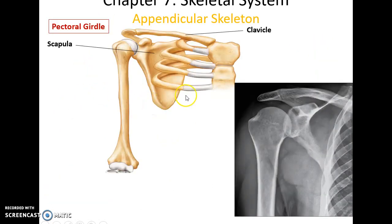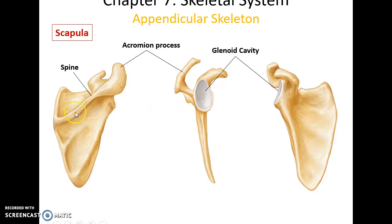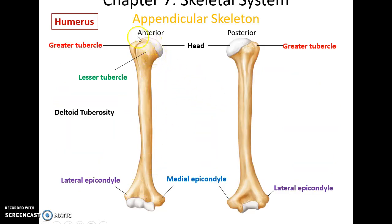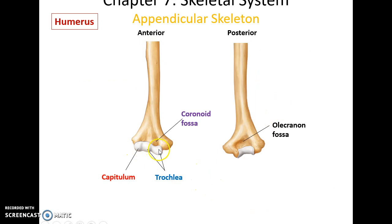The appendicular skeleton includes the pectoral girdle, consisting of the clavicle and scapula, which attaches the upper limbs to the axial skeleton. The scapula has a long spine on its posterior side that ends in the acromion process. It also has a socket called the glenoid cavity where it articulates with the humerus. The humerus has a head that fits into the glenoid cavity, a greater tubercle and lesser tubercle on its proximal portion, a roughened area called the deltoid tuberosity, and lateral and medial epicondyles.